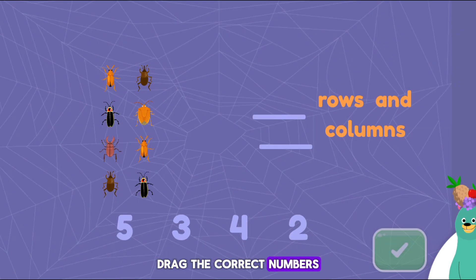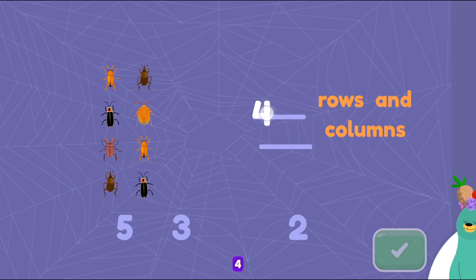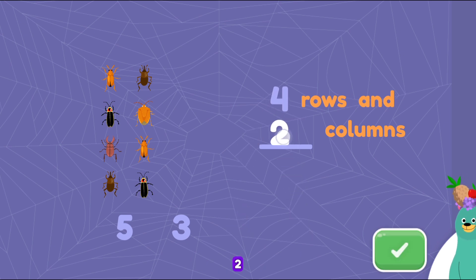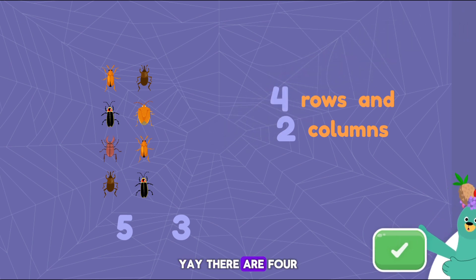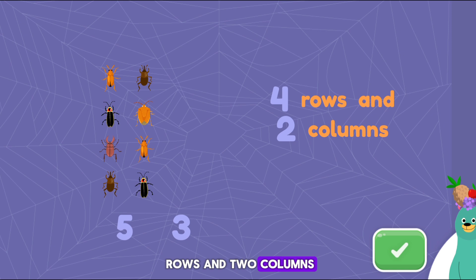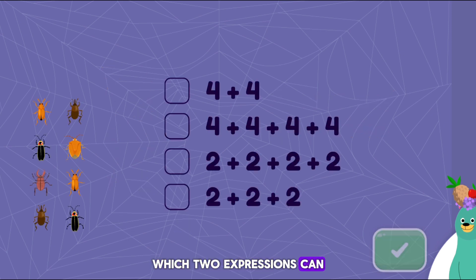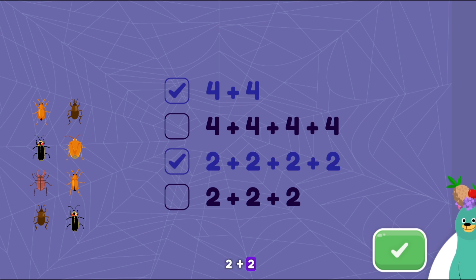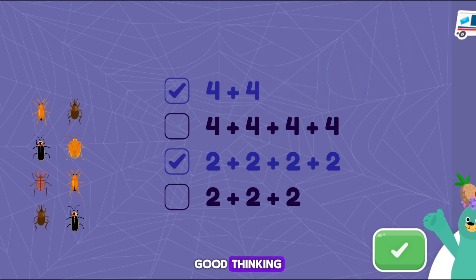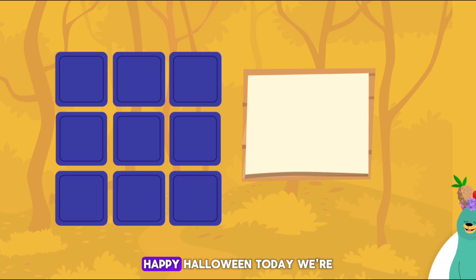Drag the correct numbers to the blanks to describe the array. 4. 2. Yay! There are 4 rows and 2 columns. Which two expressions can you use to describe the array? 4 plus 4. 2 plus 2 plus 2 plus 2. Good thinking!